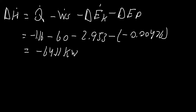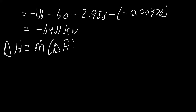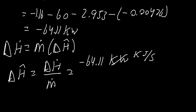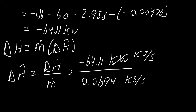All of these pieces were in kilowatts. Now, the next formula is that delta H dot equals mass flow rate times the change in specific enthalpy. So the change in specific enthalpy equals delta H dot divided by M dot. Delta H dot was negative 64.11 kilowatts — which equals kilojoules per second — divided by the mass flow rate of 0.0694 kilograms per second. The seconds cancel, giving us kilojoules per kilogram. Our answer is negative 923.8 kilojoules per kilogram.